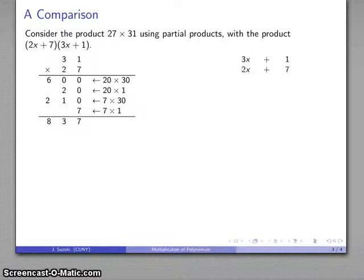On the other hand, if I take a look at the product 3x plus 1 times 2x plus 7, here I reconsidered this to be 30 and 1, 20 and 7, and then I found the product of every term with every other term. Here this is 2x and 7, 3x and 1, so I'm going to find the product of every term with every term. So what am I going to do?